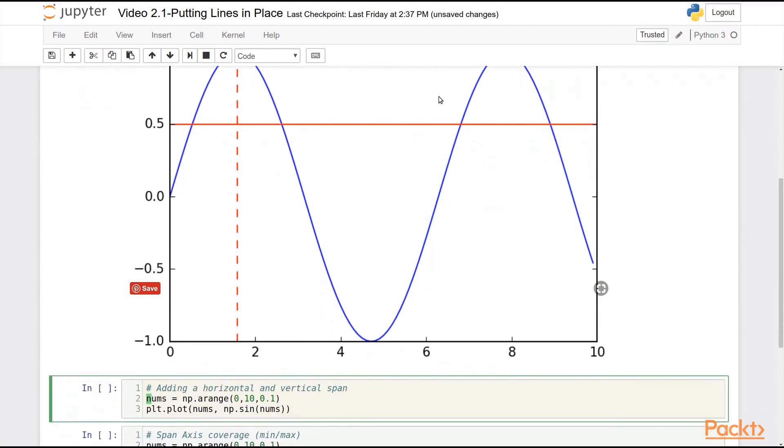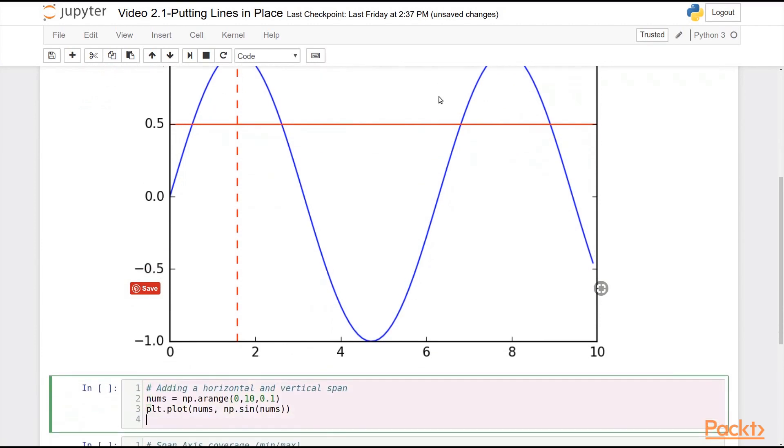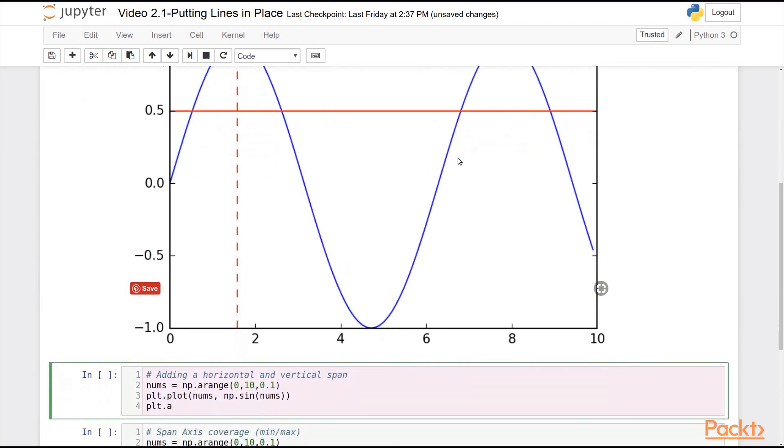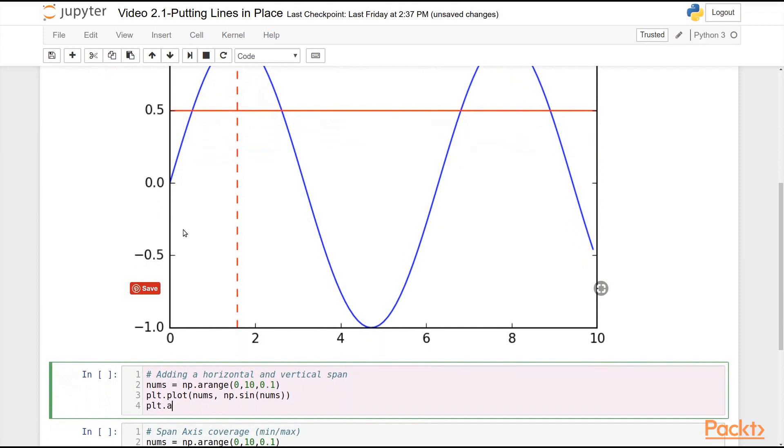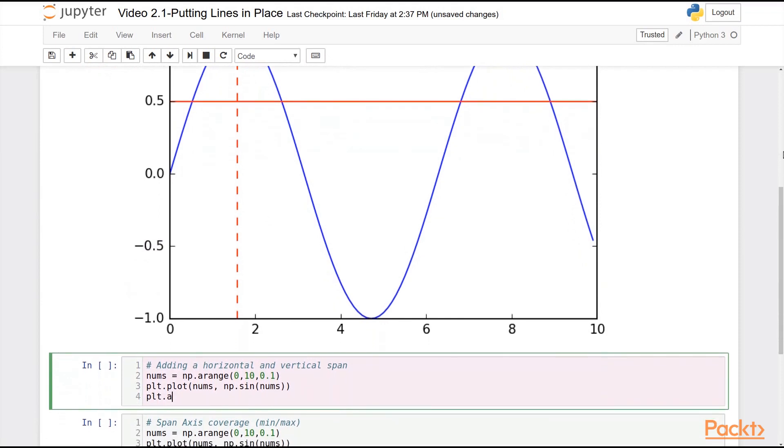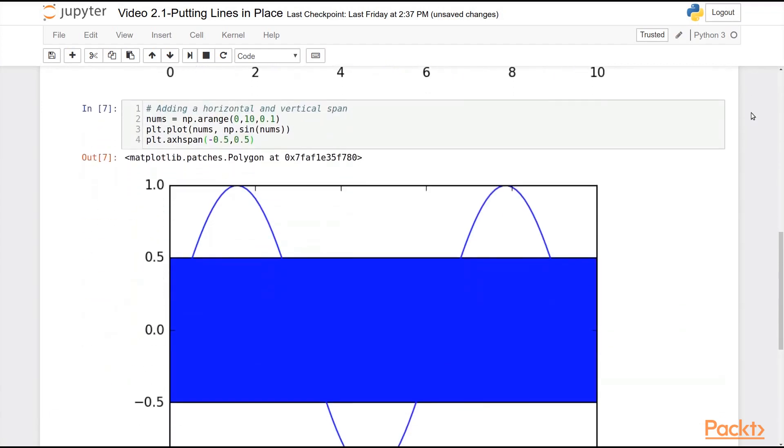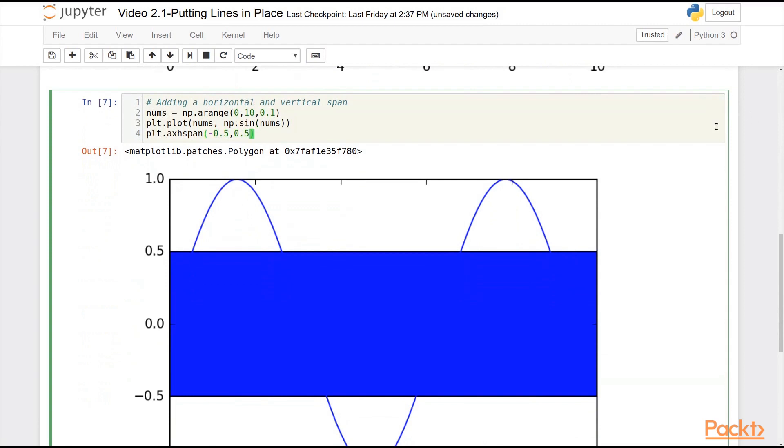I can also add spans which use a similar syntax. So let's say I don't want to just add a single line here, I want to actually color a whole region. How about let's say between 0.5 and minus 0.5. So we can do this with a horizontal span, and we're going to go between minus 0.5 and plus 0.5. And as you can see, what we get from doing that is a big blue block.